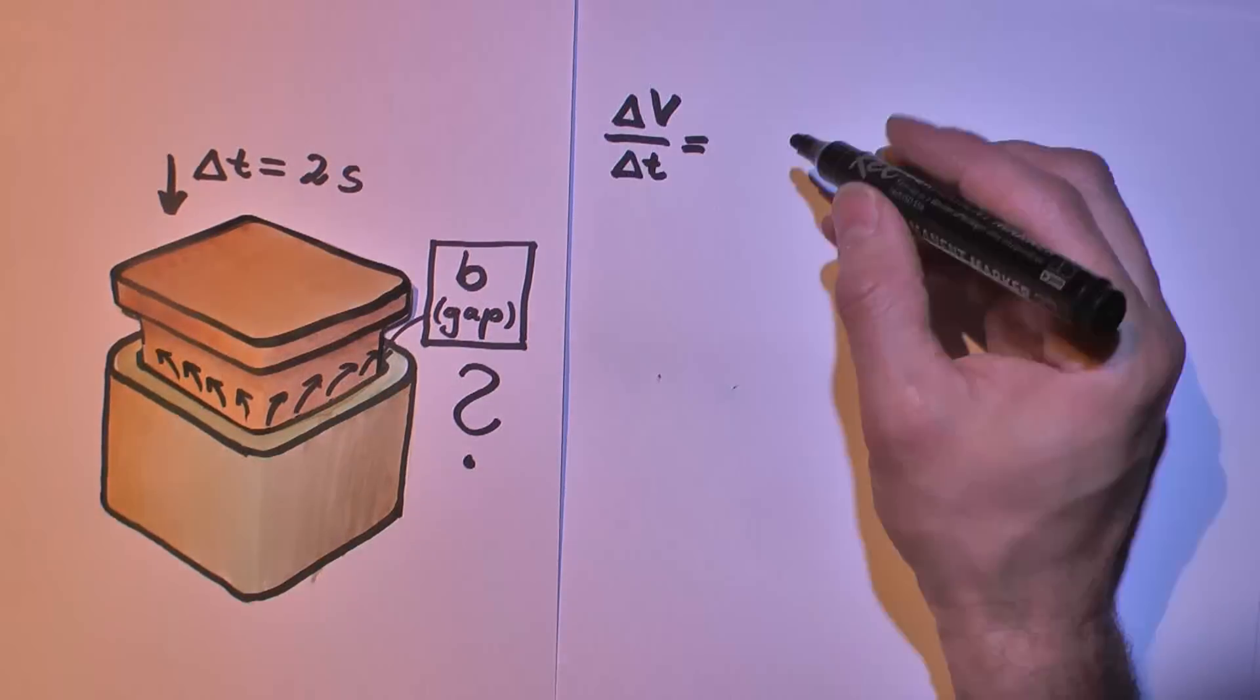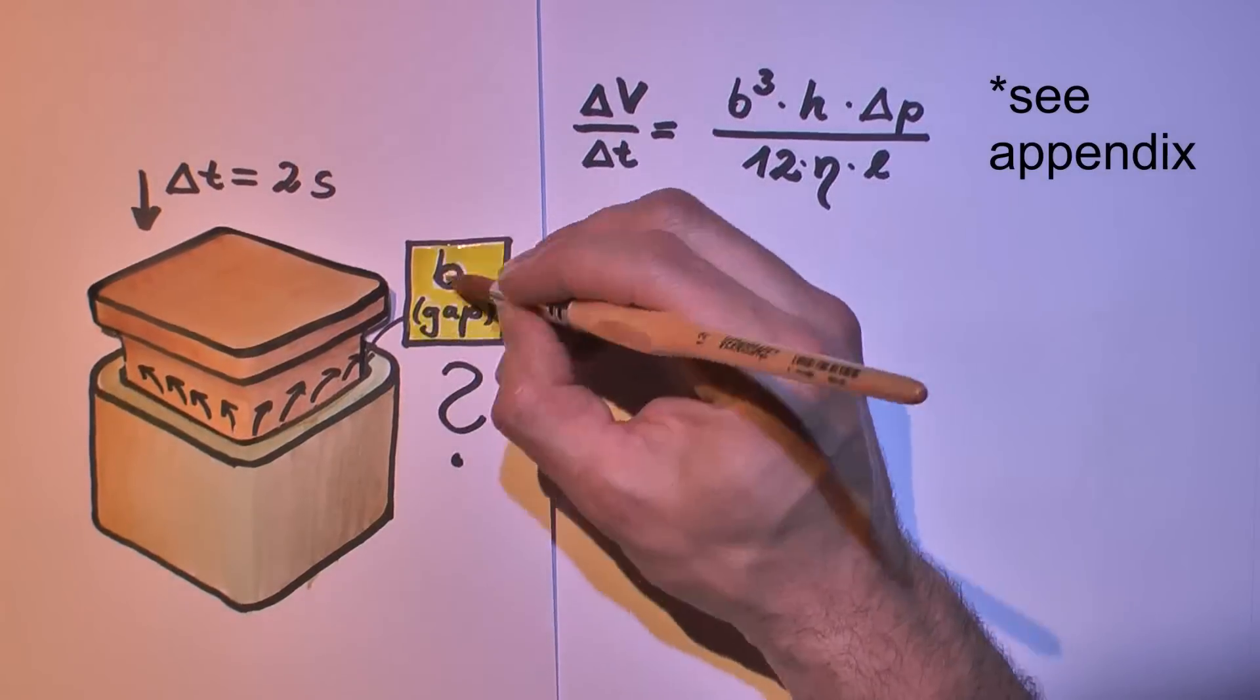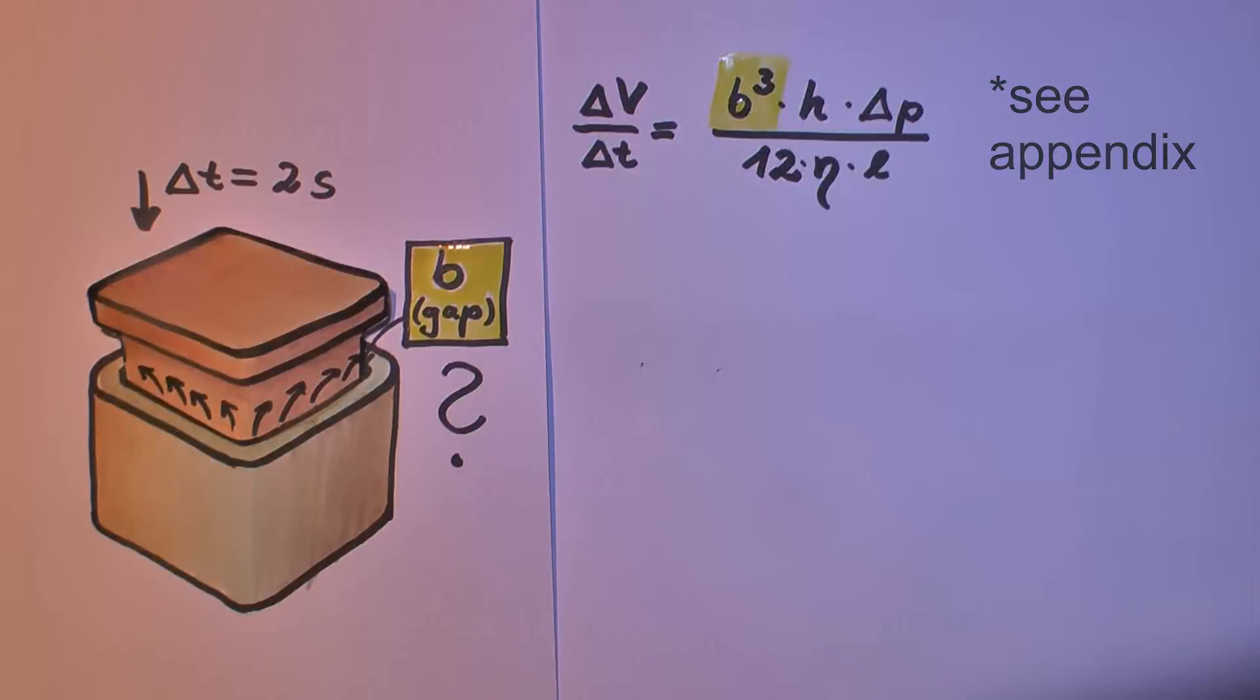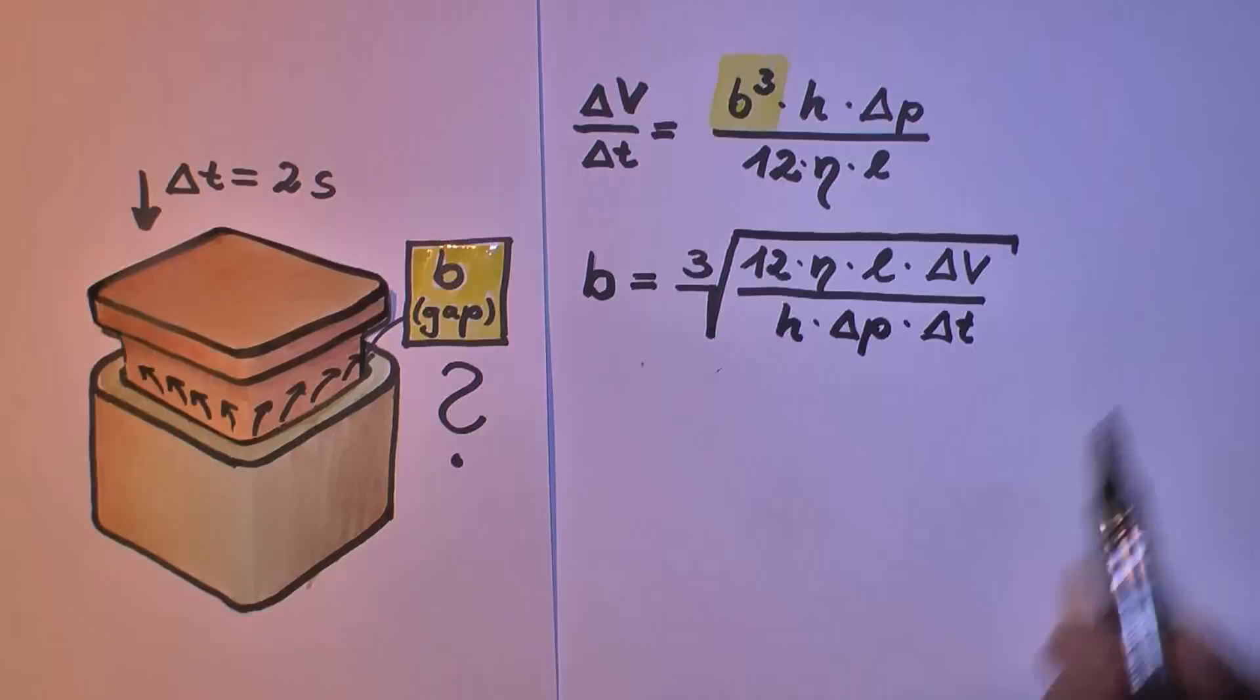Assuming a laminar flow we can try to use this equation. It's about how fast the air comes through a gap and that depends on how big that is. So in reverse the gap can be calculated if we know everything else in this equation.